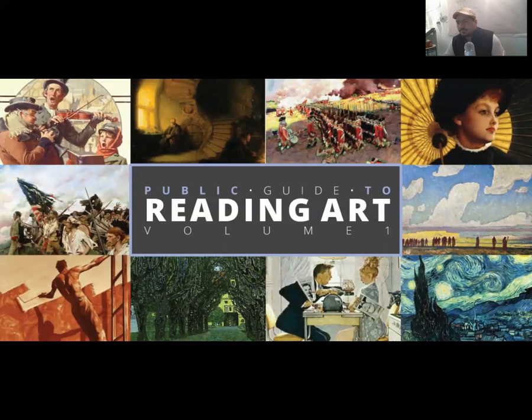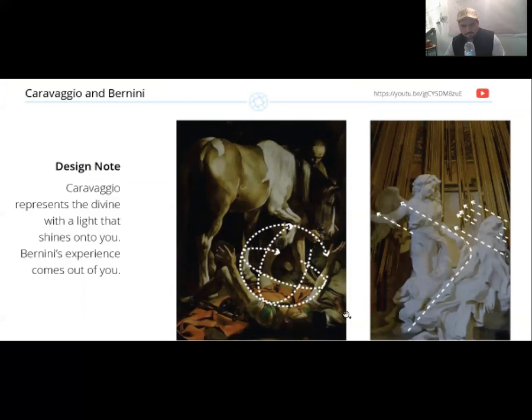Here is the book that we launched this earlier this week, The Public Guide to Reading Art Volume 1. There's over 20 images I think in this book. I'll go through and show you the images. I write a little design note giving you basically a sentence or two, an overview of what's going on in these images. At the top right-hand corner it's a PDF, so if you click on the link itself it'll actually take you to the YouTube video that corresponds with the design note and the artwork.